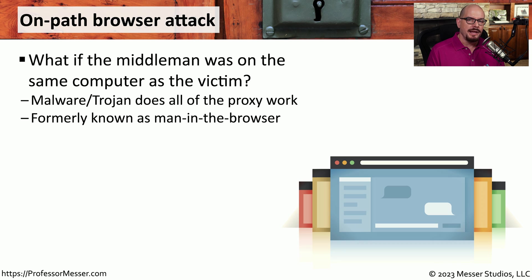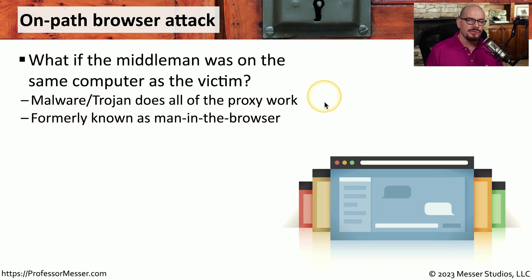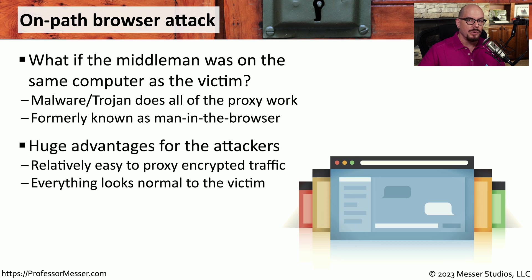The previous ARP poisoning example involved multiple devices communicating over the same network. But what if the attacker could perform this on-path attack on the same device as the victim? This is referred to as an on-path browser attack — also known as a man-in-the-browser attack. Malware or a Trojan on the device is configured as a proxy that redirects traffic before and after it's sent to the network. Even if the network traffic is encrypted, this attack can still see all information in the clear because it runs on the same device as the victim, and everything looks normal to the victim.